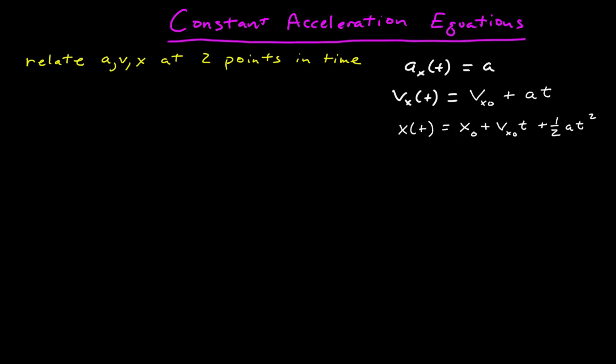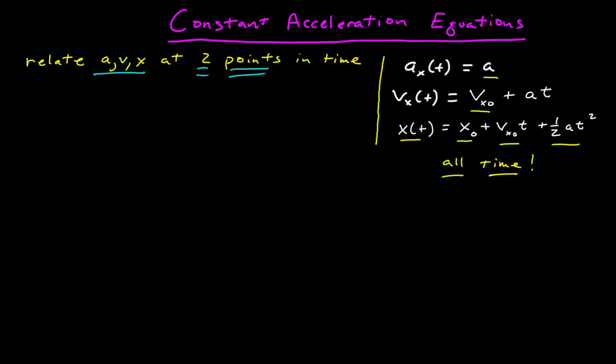In this video, I want to derive some equations that you can use to solve constant acceleration problems. Before, we found the three functions in time for constant acceleration. These functions are valid for all time. But often when I solve problems, I'm not really interested in what's going on for all time. I want to know what's happening at two specific points in time, and so I want to use these expressions to derive other relationships that relate the acceleration, velocity, and position at two specific points in time.